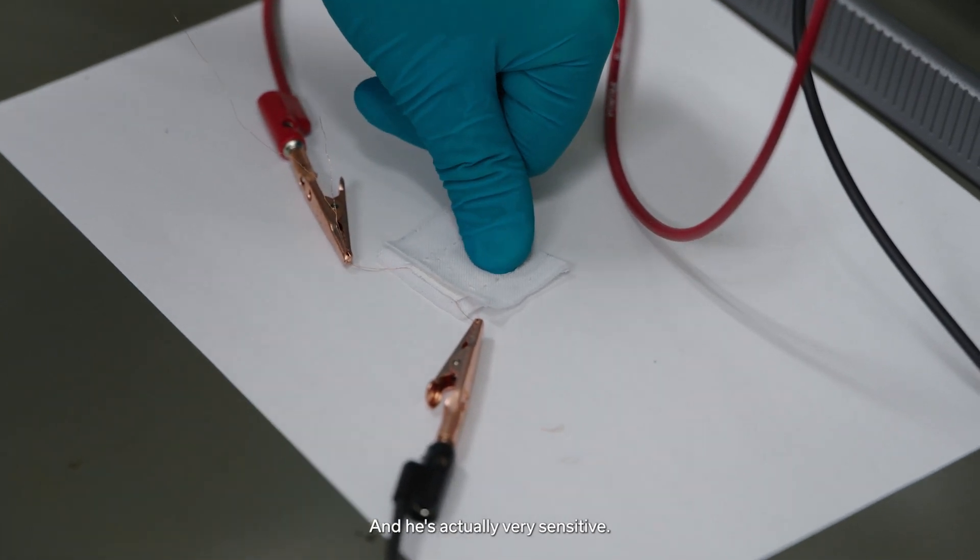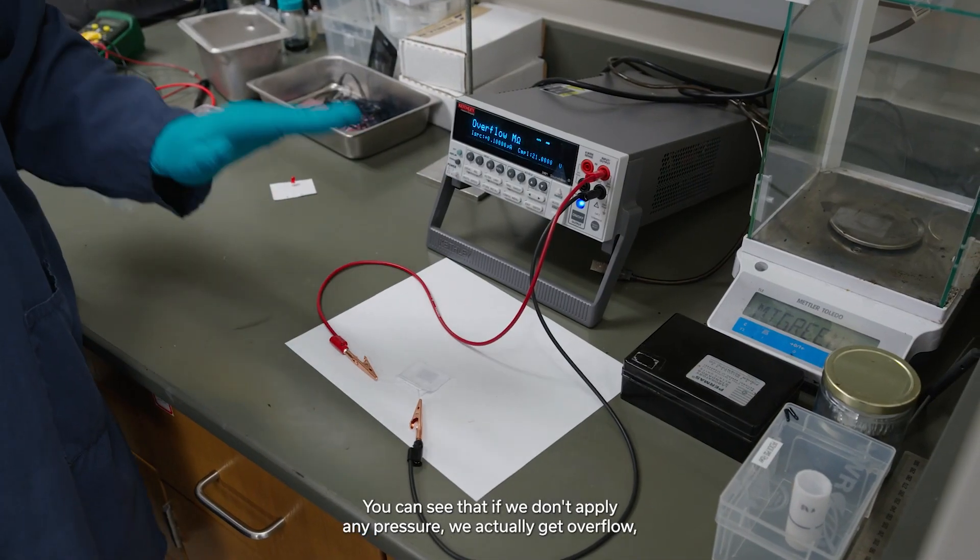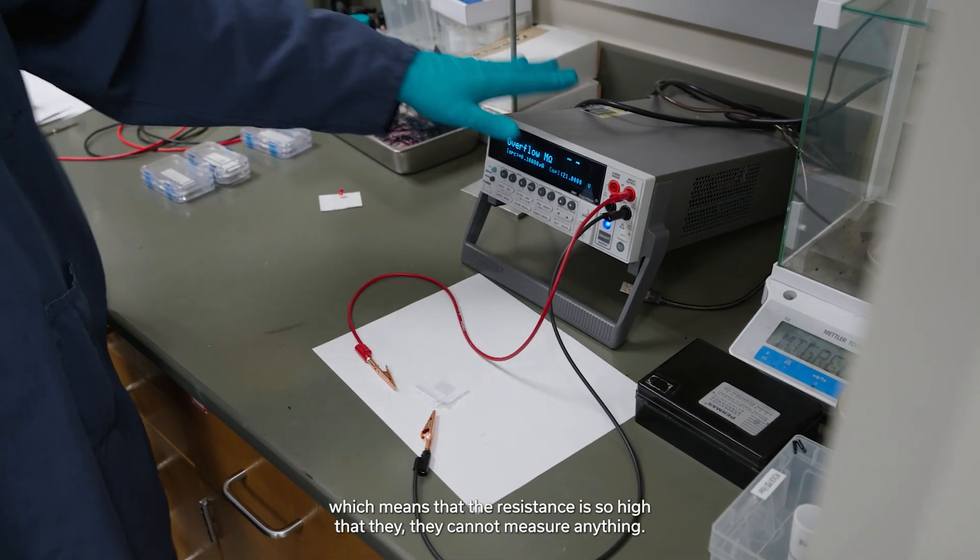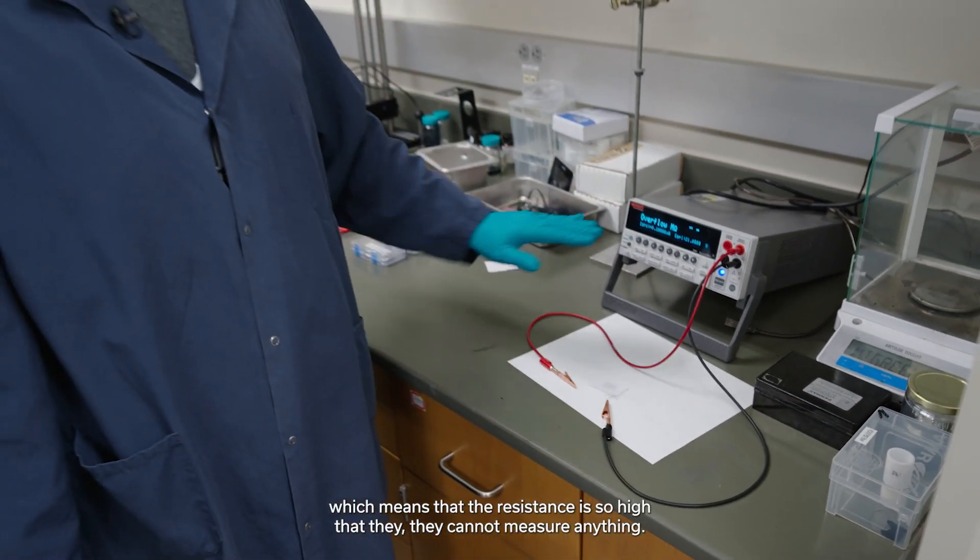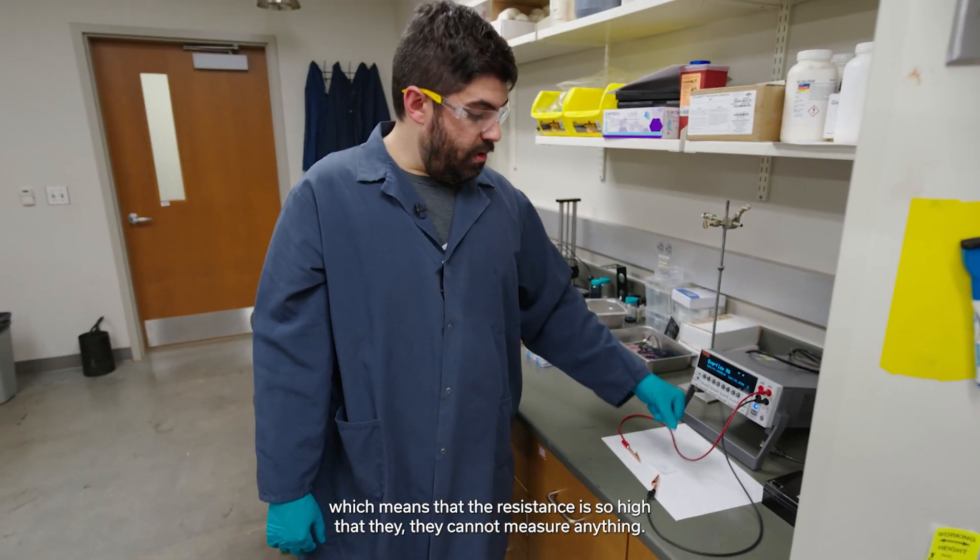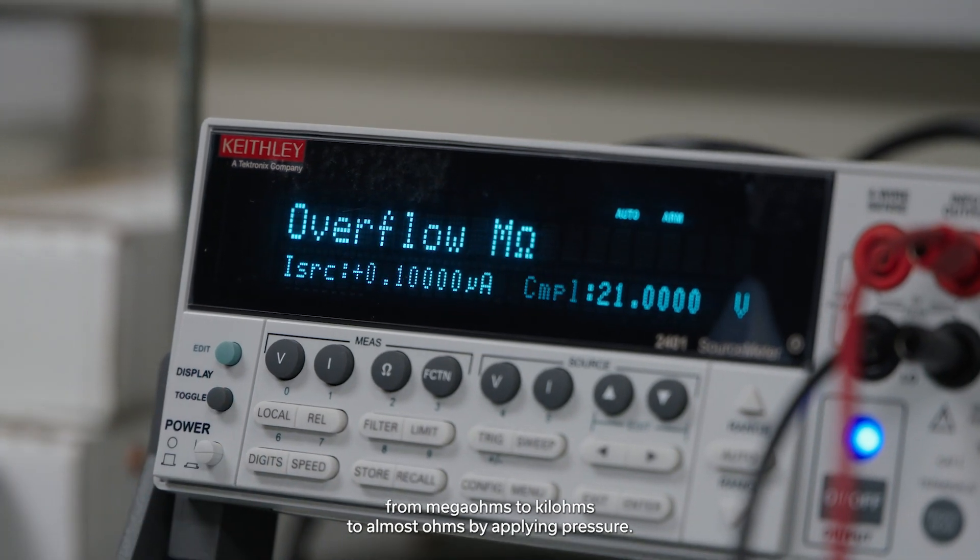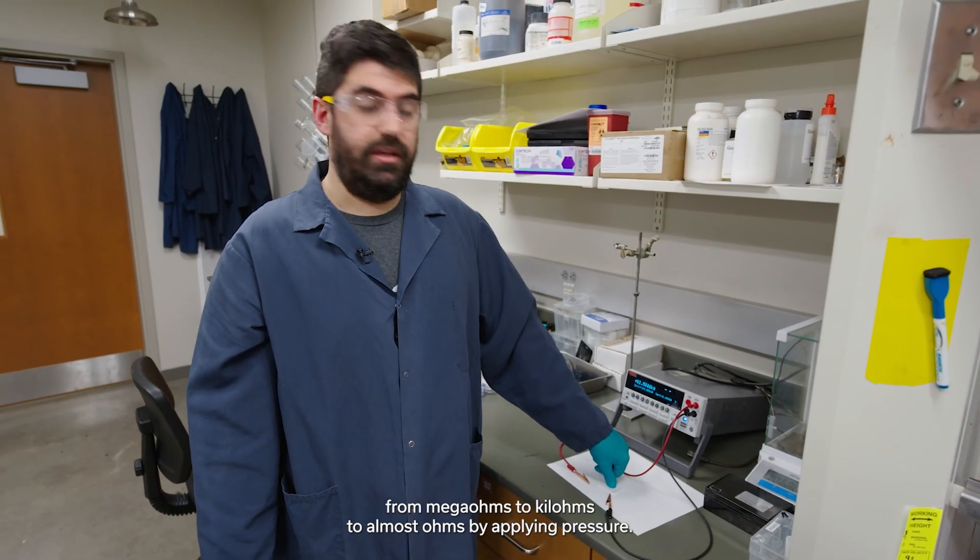And it's actually very sensitive. You can see that if we don't apply any pressure we actually get overflow, which means that the resistance is so high that the multimeter cannot measure anything. But we actually go several orders of magnitude from megaohms to kiloohms to almost ohms by applying pressure.